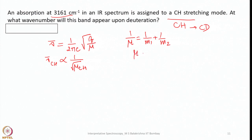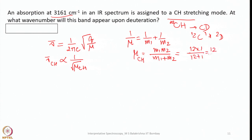We calculate the reduced mass using μ = m₁m₂/(m₁+m₂). For CH: μ(CH) = (12×1)/(12+1). Similarly, μ(CD) = (12×2)/(12+2).